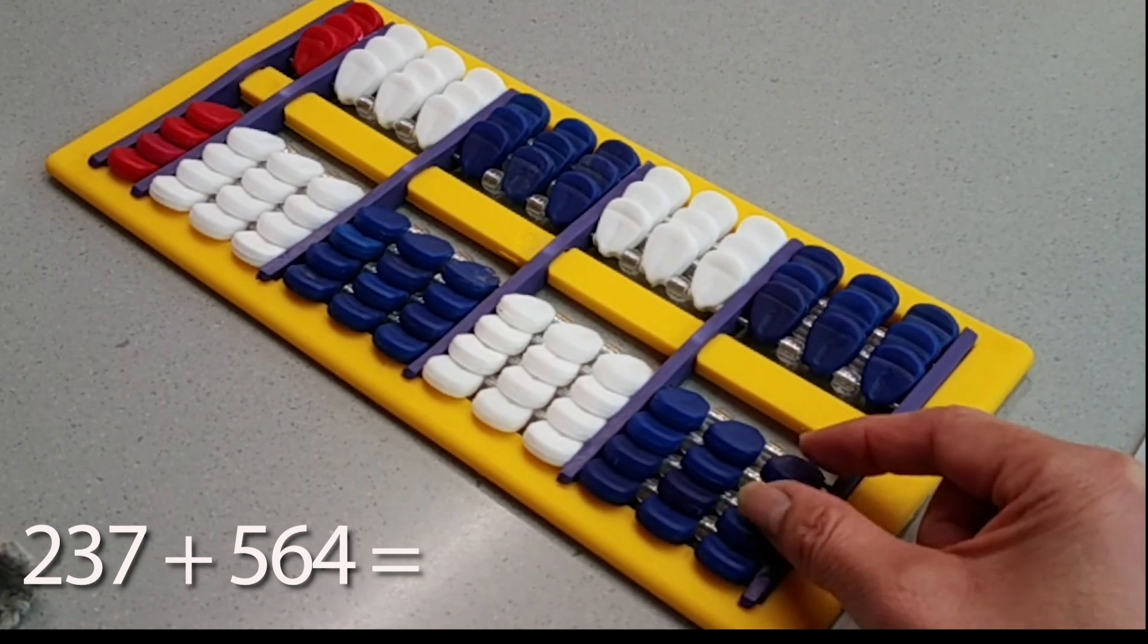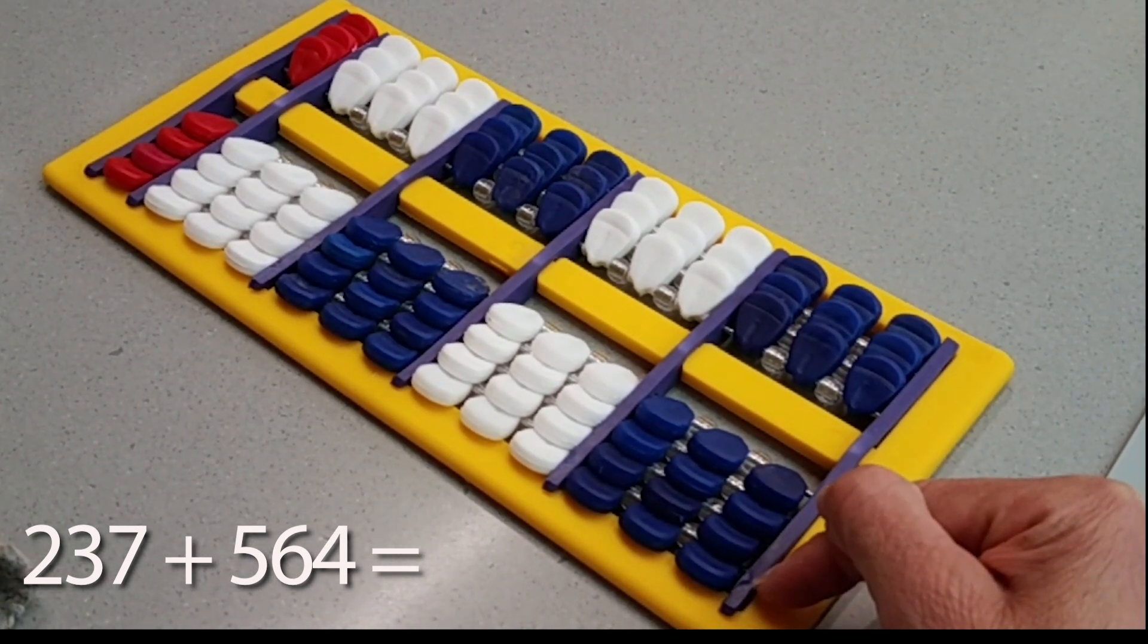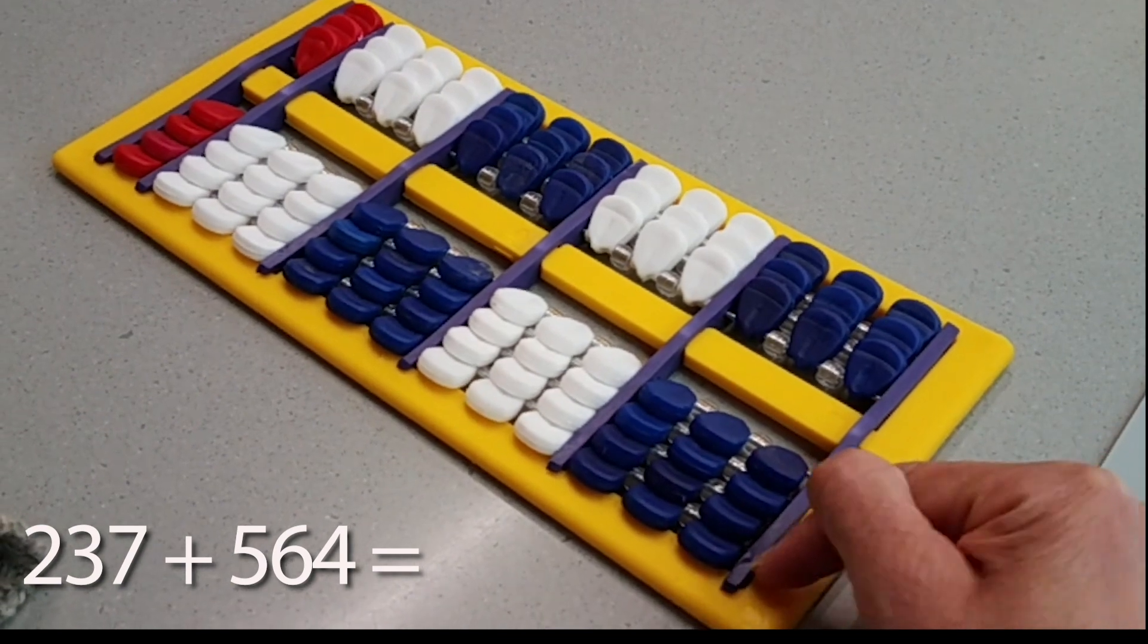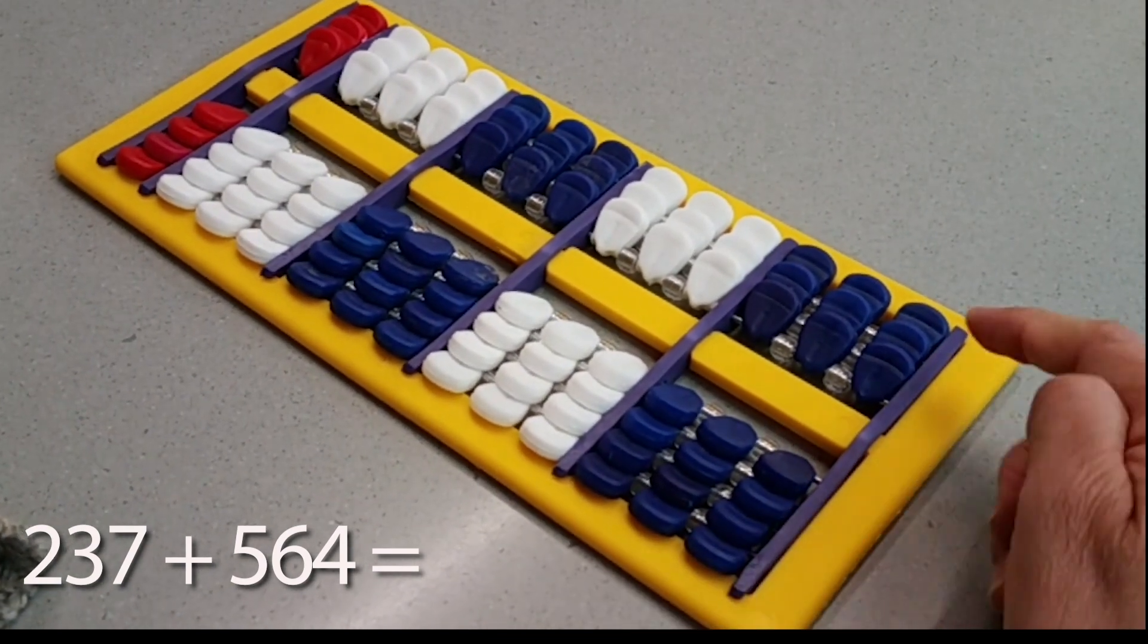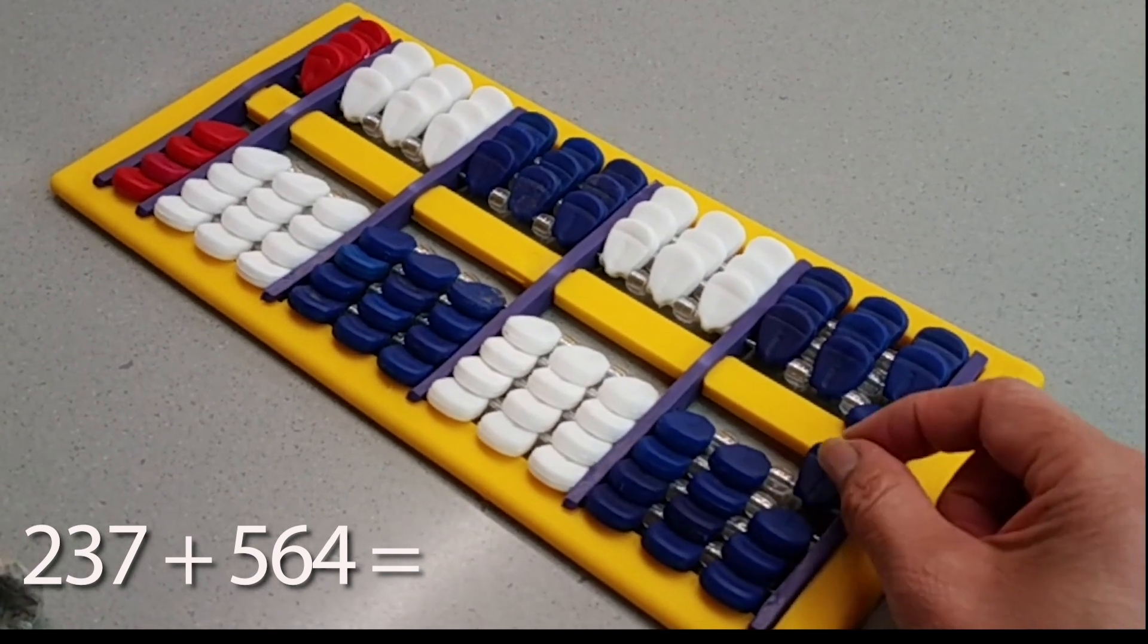And this is one, two, three, four. So anything on the bottom of the yellow line is in terms of ones. So to represent seven, it's going to be five, six, seven.